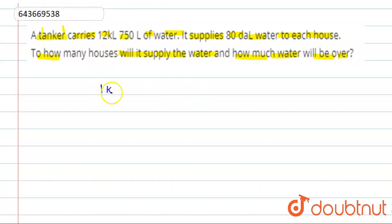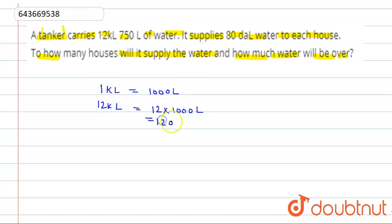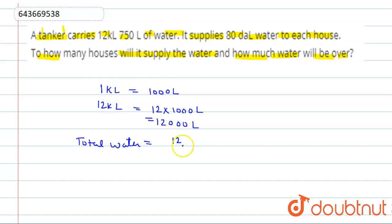We know that 1 kilolitre is equal to 1000 litres. So 12 kilolitres is equal to 12 × 1000 = 12,000 litres. Therefore, the total water in the tanker is 12,000 + 750 = 12,750 litres.